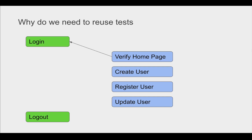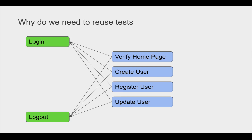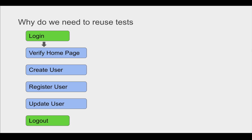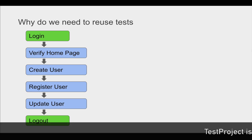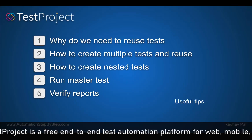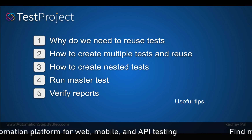We can then call these test cases wherever required. For example, if you need to call login while verifying a homepage, we can call the login test. Similarly in create user and every module, and the same goes for logout. So we can actually reuse test cases and also do nesting. For example, a complete scenario starts with login, then verify homepage, create user, register user, update user, and logout — we can create these modules separately and chain them through nesting.